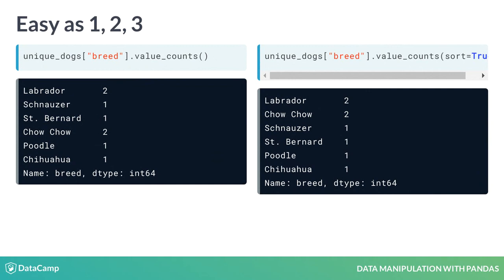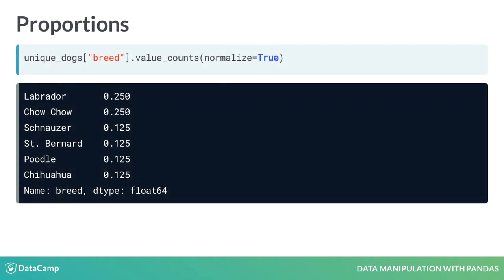To count the dogs of each breed, we'll subset the breed column and use the value_counts method. We can also use the sort argument to get the breeds with the biggest counts on top. The normalize argument can be used to turn the counts into proportions of the total. 25% of the dogs that go to this vet are Labradors.